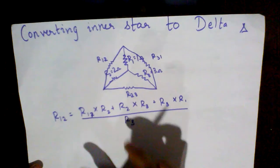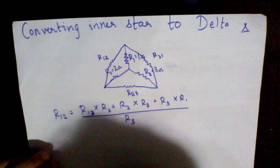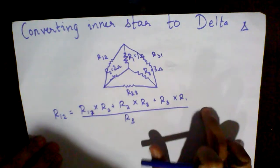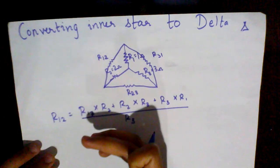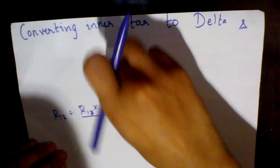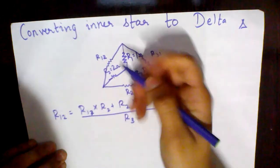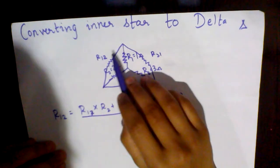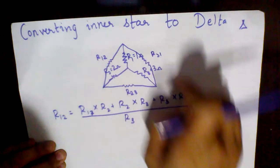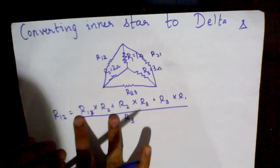This is the tricky part. For R12, it's R1 into R2 plus R2 into R3 plus R3 into R1, and you divide by the resistance not included, which is R3. In star to delta conversion, when you multiply these resistances, you divide by the resistance that's not present in that pair.